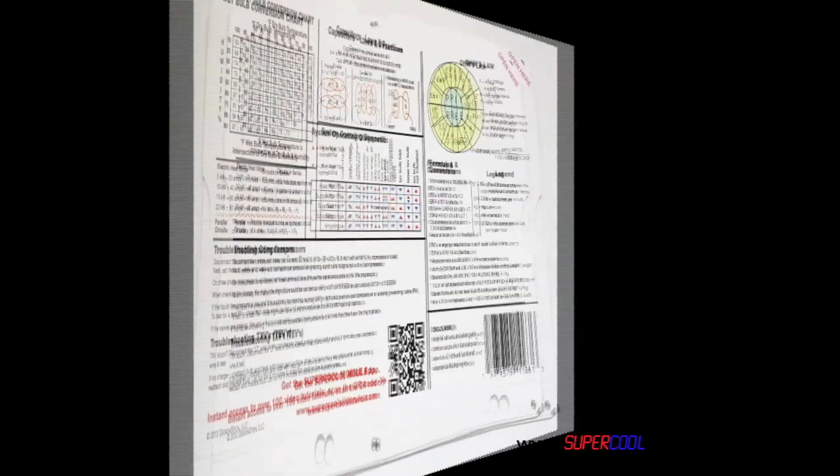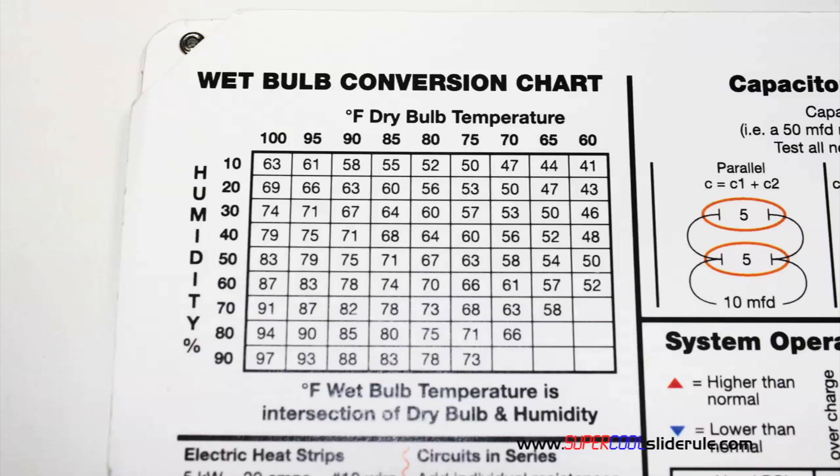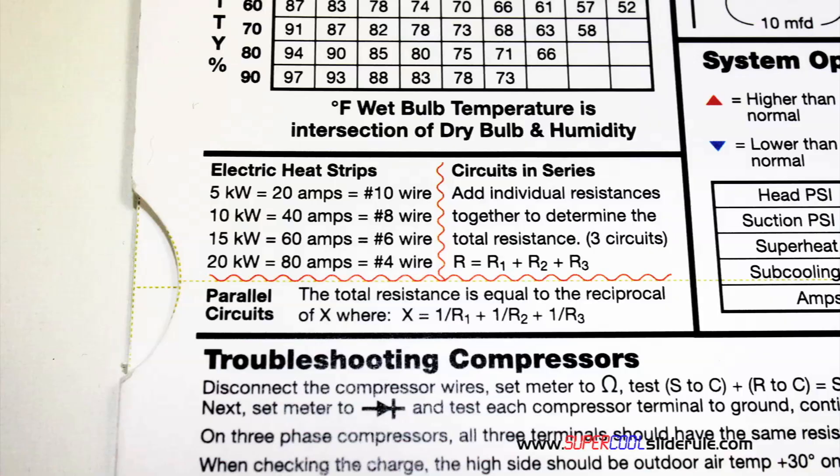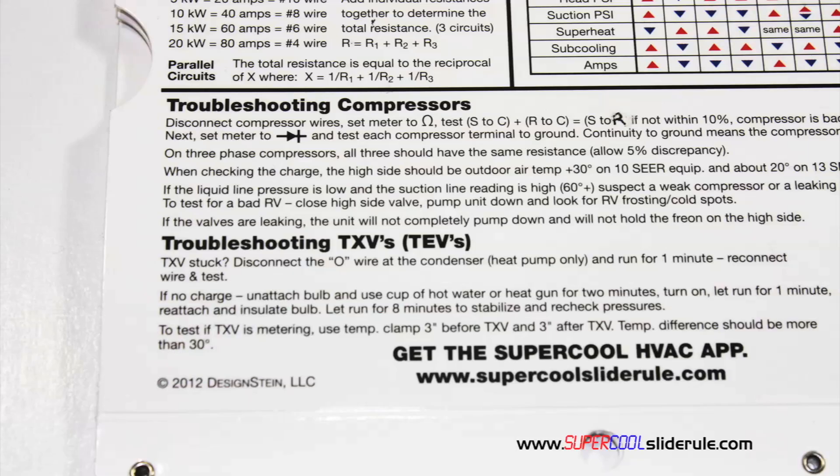The back cover contains required formulas. It has capacitor rules and practices, a wet bulb conversion chart, how to perform computations on series or parallel circuits, an electric heat strip guide, a complete system troubleshooting diagnostic chart, and how to troubleshoot compressors and TXV.